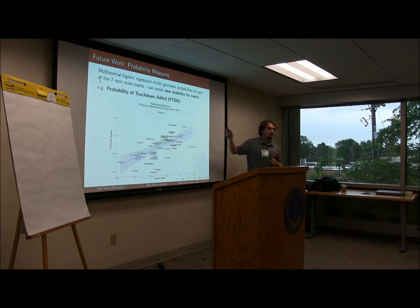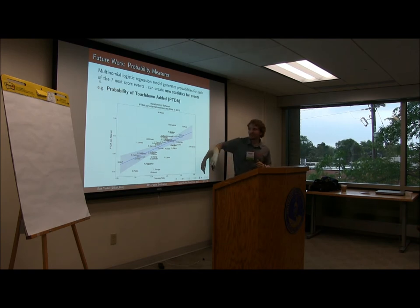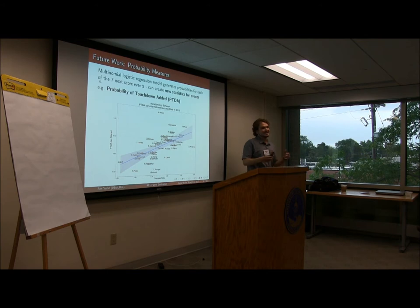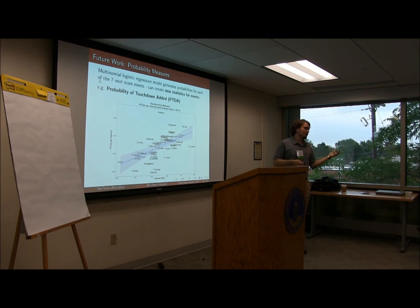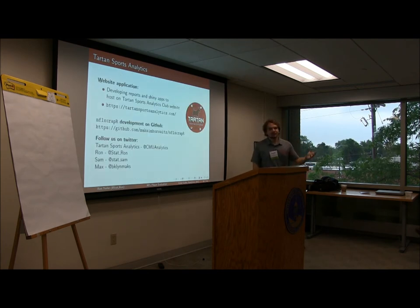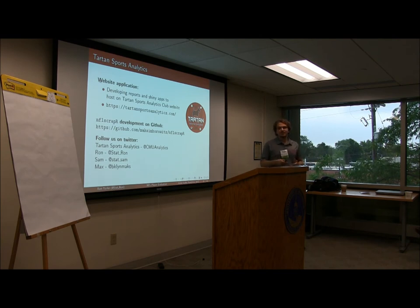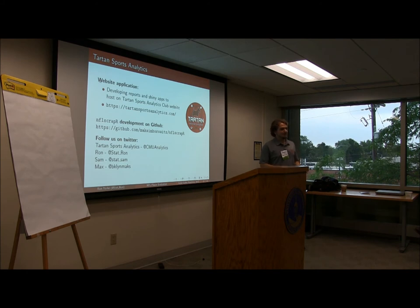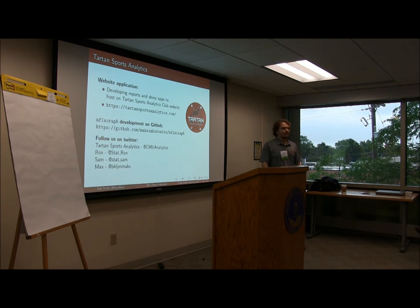Using our model, we have probabilities for each of the events. On the y-axis is probability of a touchdown added per attempt versus success rate. Guys like Matt Moore and Jimmy Garoppolo exceeded their success rate in terms of probability of a touchdown added — and I can do this for each different type of scoring event, like probability of a field goal added, which might measure getting into a scoring position. I encourage you to check out the Tartan Sports Analytics website where we'll be posting markdown files, Shiny apps, and visualizations. Follow the GitHub and us on Twitter. If you're at a university, I strongly encourage you to start a sports analytics club — we're able to get students and professors involved in research.